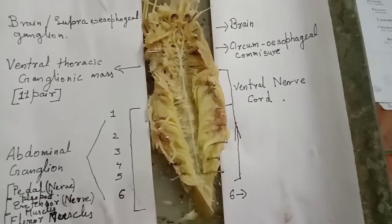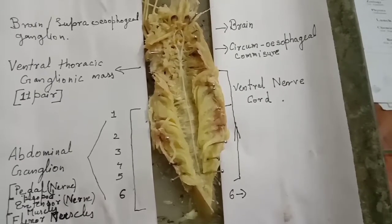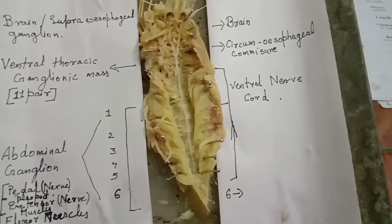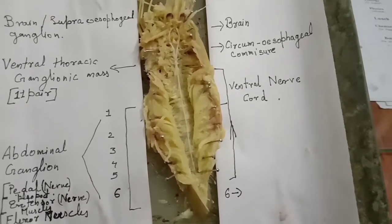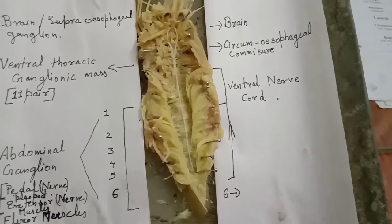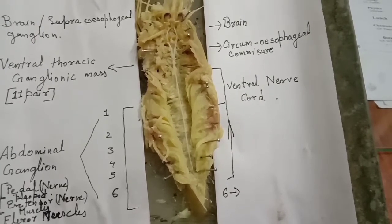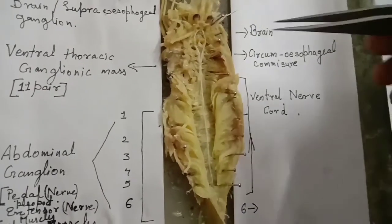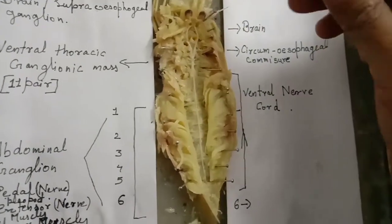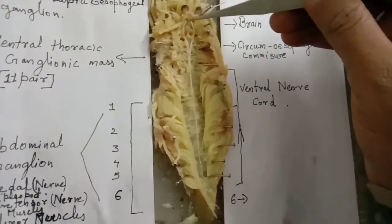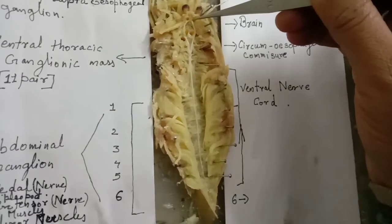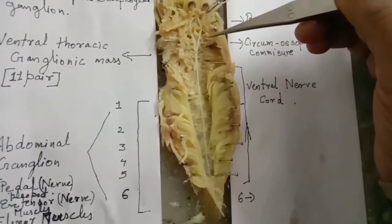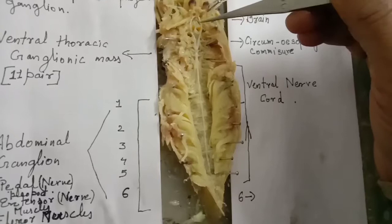The rostrum should be cut away and the cuticle plates overlaying the brain should be removed. Carefully, with a needle, study the various parts of the nervous system of Palaemon. The brain, or supraesophageal ganglion, is a bilobed ganglion situated at the base of the rostrum.